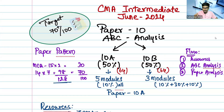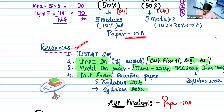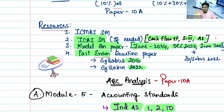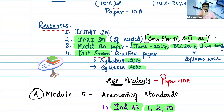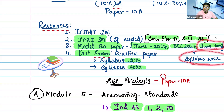Now, what is the process we are going to follow in this analysis and what resources do we need? For Paper 10A, the resources we will utilize are: first, ICAI study material and ICMI institute study material. Second, CA study material for cash flow statement, Schedule 3, and accounting standards — that covers companies accounts and accounting standards. Third, model question papers of June 2024, previous attempt December 23, June 23 of syllabus 2022, and past exam questions of syllabus 2016 and syllabus 2022.